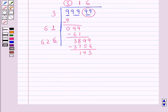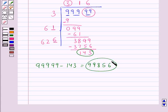Now we subtract this remainder from the number 99999. We get 99856. This number 99856 so obtained is a perfect square.